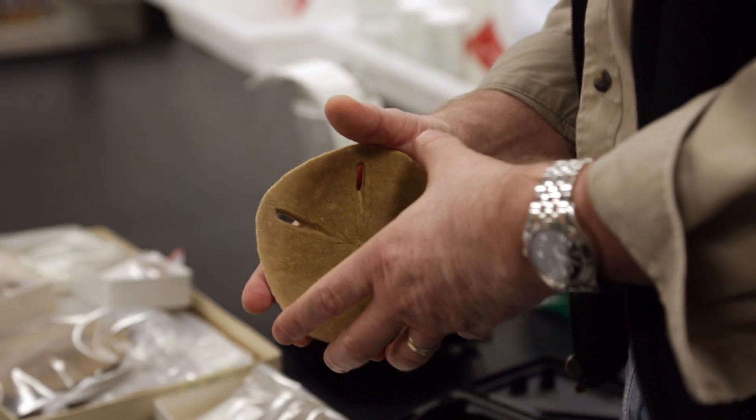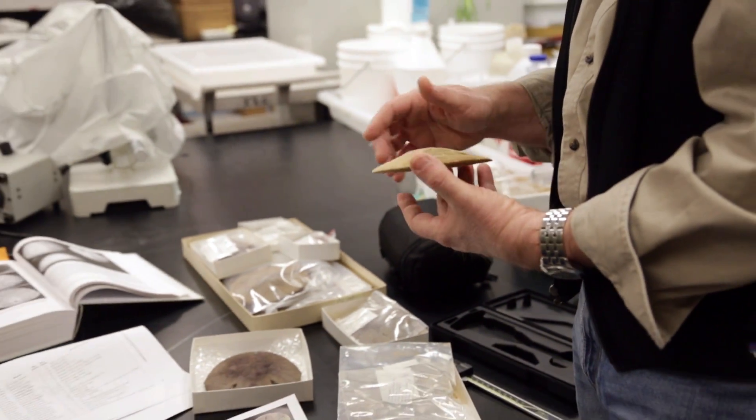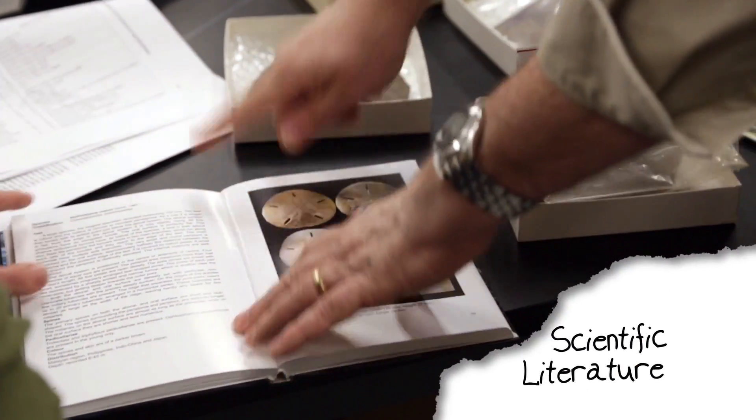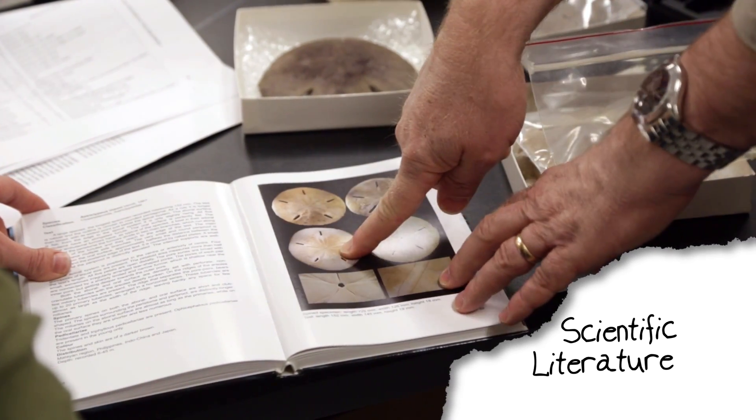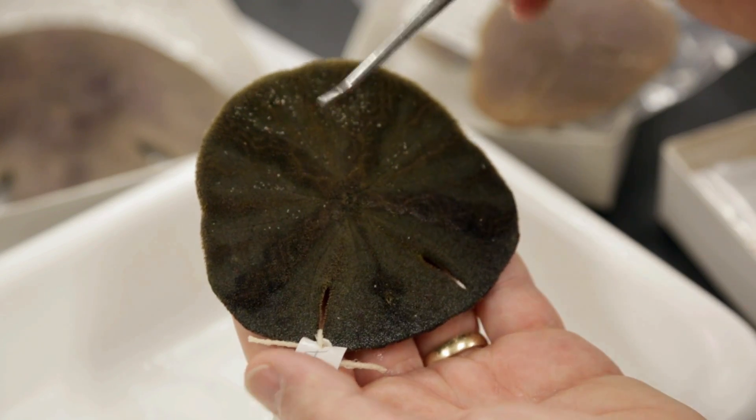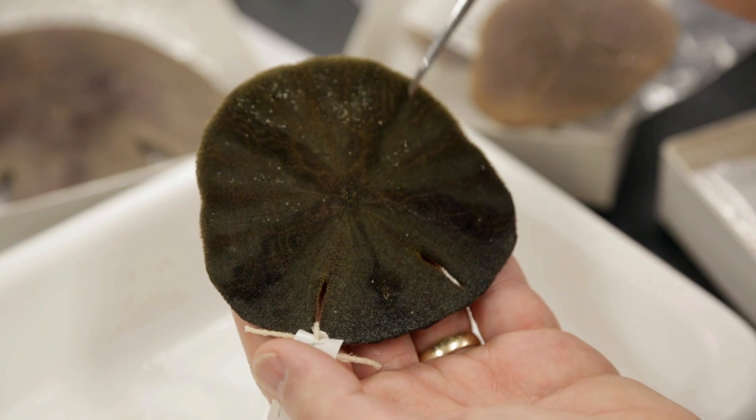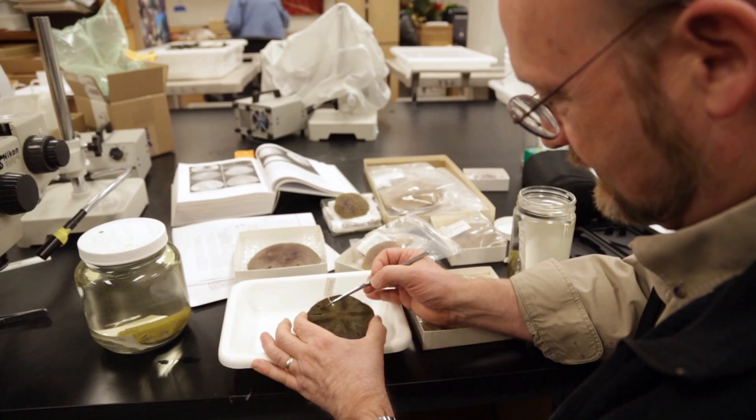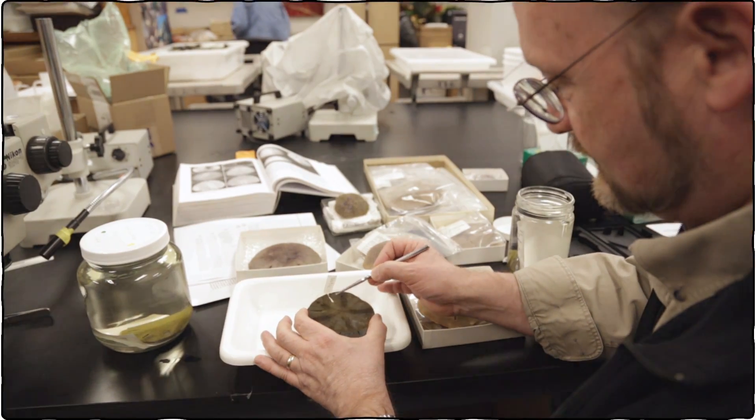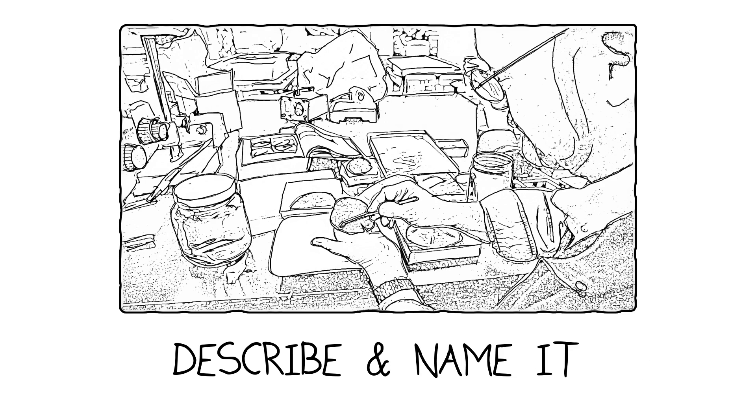Once you have the morphology and genetic work completed for your specimen, you can look at collections and study what's been published in the scientific literature. Has this type of sand dollar been described already? Does it already have a name? As my study continues, I might realize that no one else has ever seen or described or named this organism before, and that is one of the most exciting moments there is for a taxonomist.